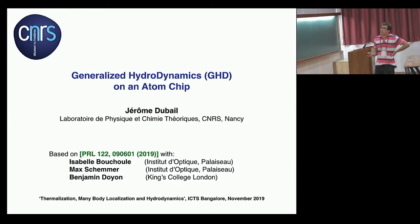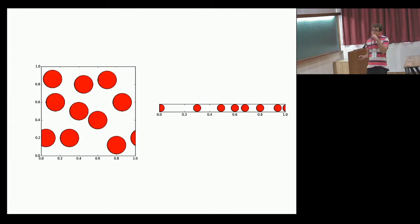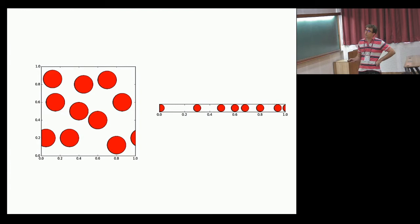Basically what we have in mind when we talk about GHD is this: imagine we take a hard-core sphere system, or a two-dimensional billiard, and we suddenly kick one of the balls.